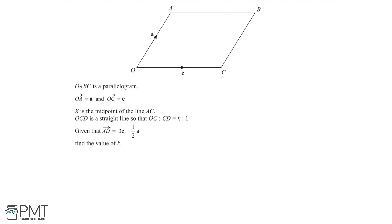In this question, we are given a parallelogram OABC, and we are told that the vector OA is equal to a, and that the vector OC is equal to c. X is the midpoint of the line AC, and we are told that OCD is a straight line such that the ratio of OC to CD is equal to K to 1. We are also told that the vector XD is equal to 3c minus half a, and we need to find the value of K.